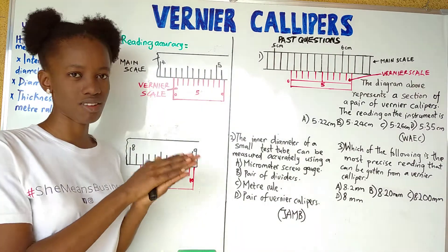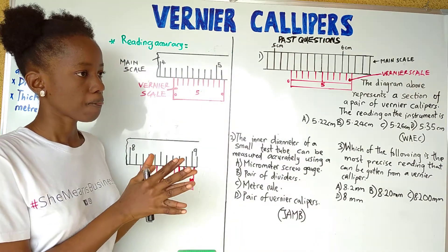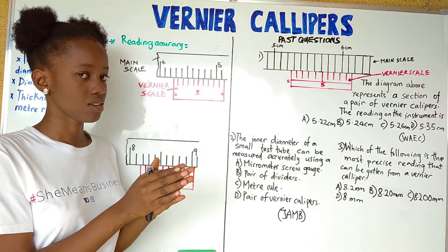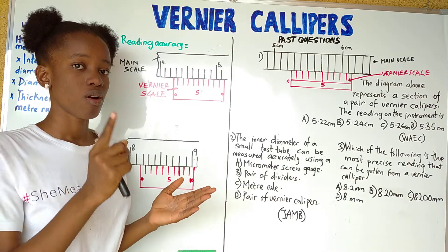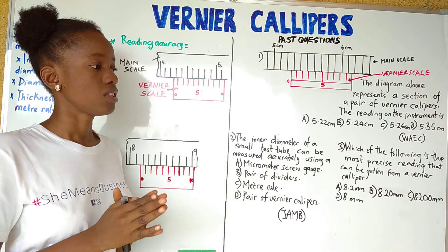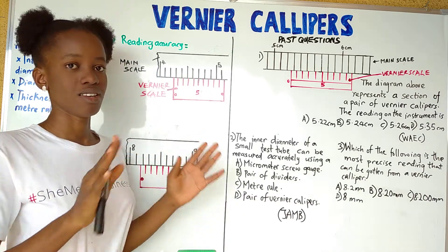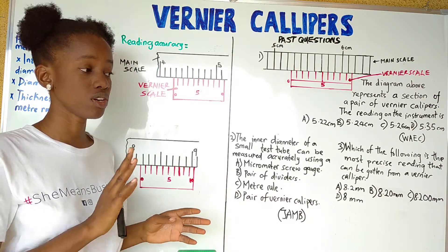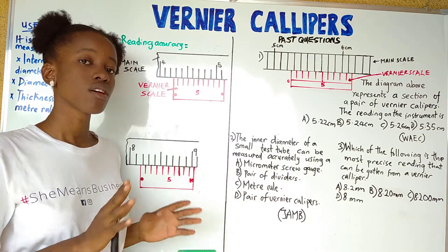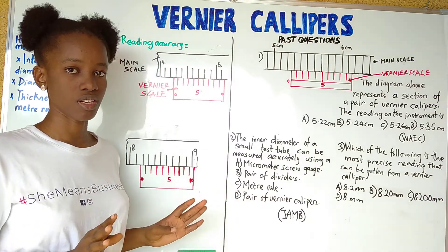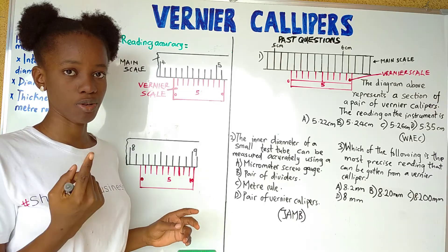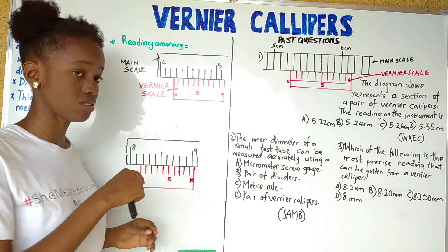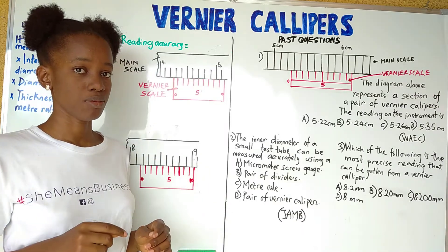Now, assuming the clock doesn't have seconds but has just hours and minutes, the reading accuracy will be one minute. And assuming it's a fancy clock that shows only hours — no minutes, no seconds — the reading accuracy will be one hour, because that's the smallest graduation available.